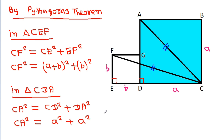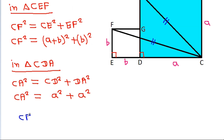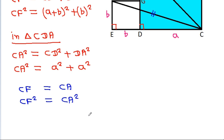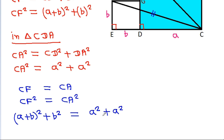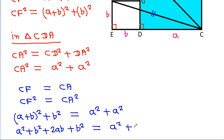We have CF equal to CA, so CF² equals CA². Therefore (a + b)² plus b² equals a² plus a². Expanding: (a + b)² plus b² equals 2a².